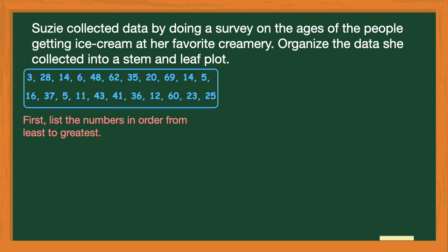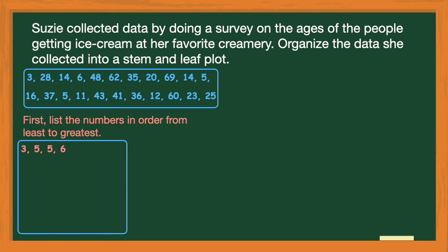The first thing I'm going to do is list those numbers in order from least to greatest in a way that will make creating the stem and leaf plot a whole lot easier. Looking at my big list of numbers, I see the single digit numbers 3, 5, 5, and 6 — I write those down in the first row and cross them off. Then I look for the next numbers: 11, 12, 14, 14, and 16 — two digit numbers — and I write those underneath. After 16, I see 20, 23, 25, and 28, so since those are in the 20s I put them in a third row.